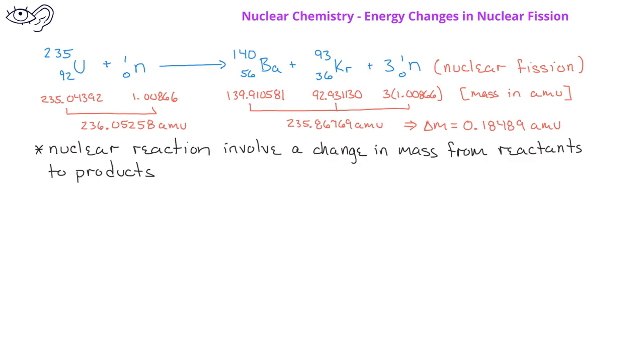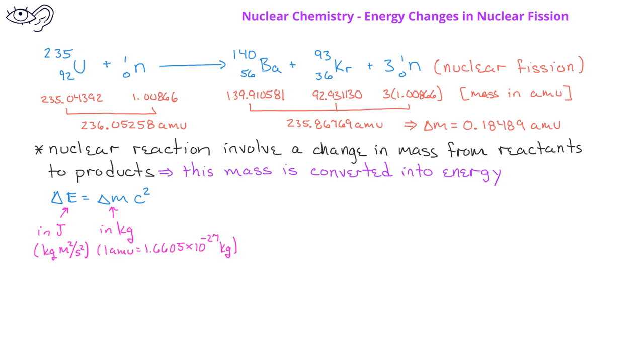While we learned that chemical reactions require conservation of mass, nuclear reactions have no such requirement. In nuclear reactions, the mass that is lost is converted to energy based on Einstein's equation, delta E equals delta M times the square of the speed of light. In Einstein's equation, the energy change will be in units of joules, which is the same as a kilogram meter squared per second squared. Because a joule is a kilogram meter squared per second squared, the change in mass must be in kilograms. As a result, we'll need to convert AMU units to kilograms based on the relationship that one AMU is 1.6605 times 10 to the negative 27 kilograms.